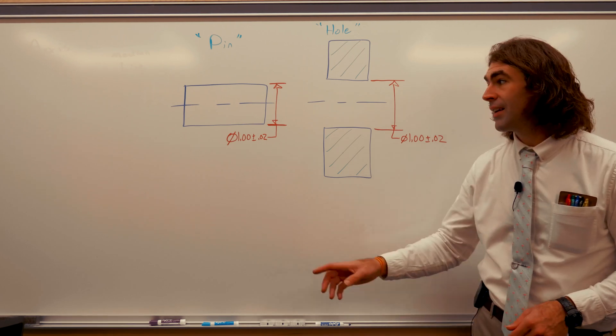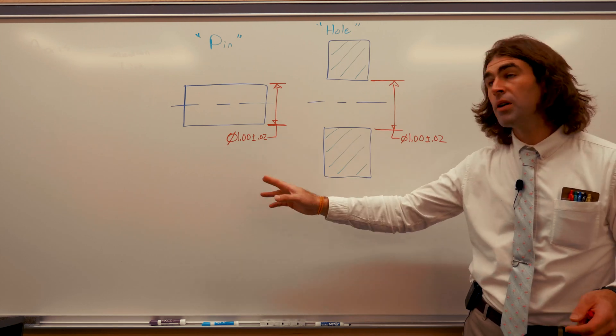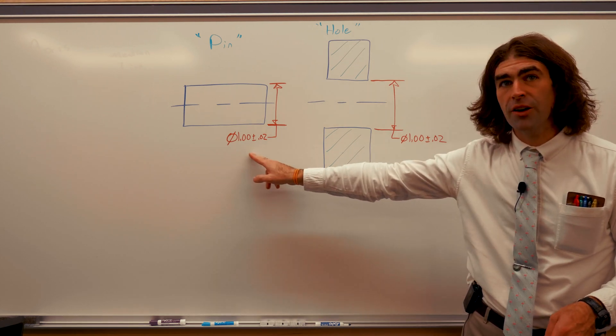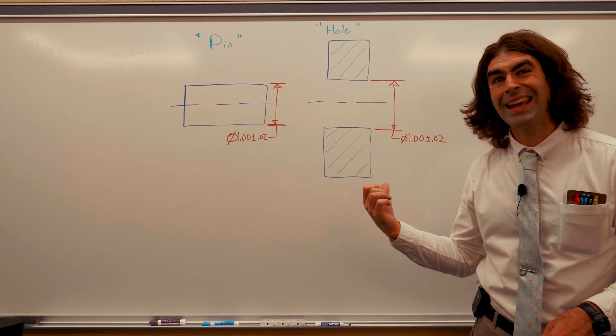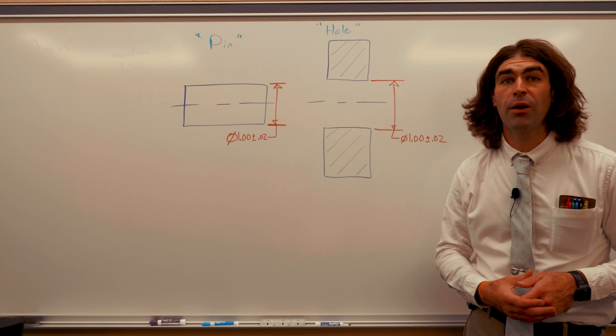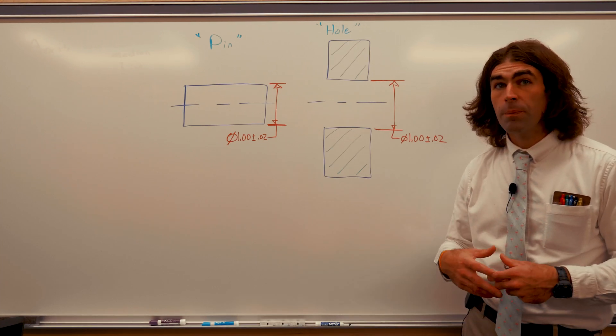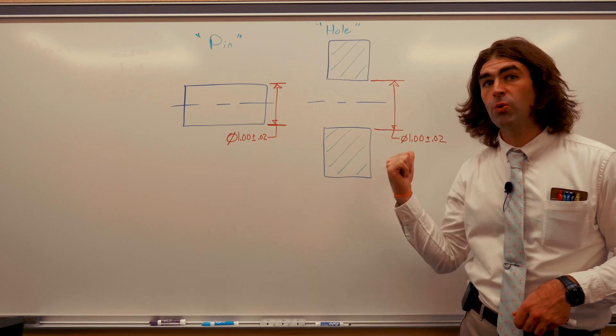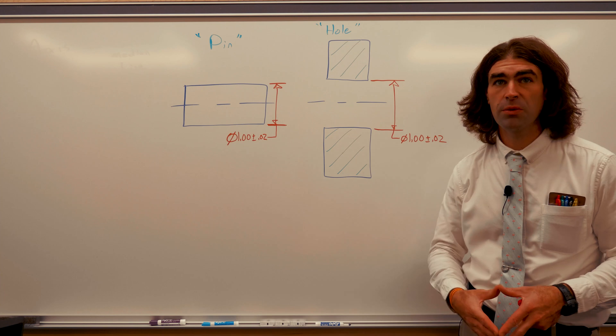The reason is that at worst case, if we wanted these two parts to have some clearance and wiggle, the worst case is that the pin comes in at 1.02, the hole comes in at 0.98. You would have 40 thousandths of interference in those two parts. So this is the MMC of the pin compared to the MMC of the hole, also known as our allowance.